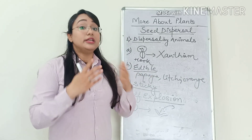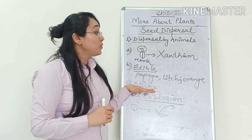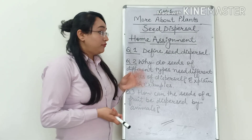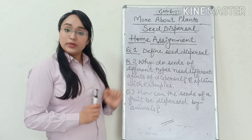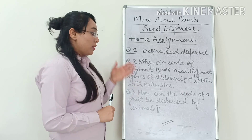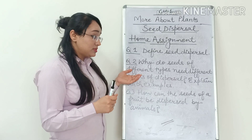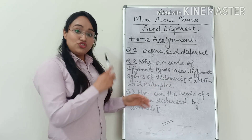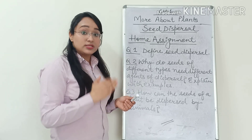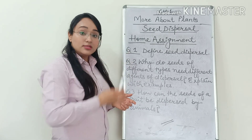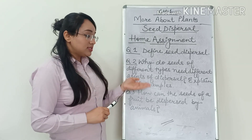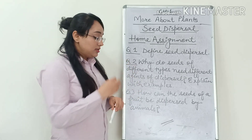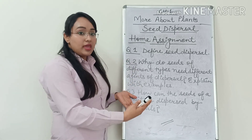So these were the few agents and the adaptations that we discussed in today's lesson — seed dispersal and its agents with examples. Here is a small assignment: Question one, define seed dispersal. Question two, why do seeds of different types need different agents of dispersal? Explain with examples — give all the methods and agents along with examples. Question three, how can the seeds of a fruit be dispersed by animals? Write the way along with examples.